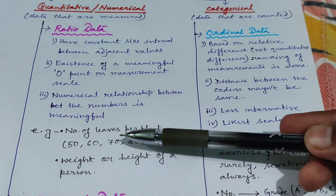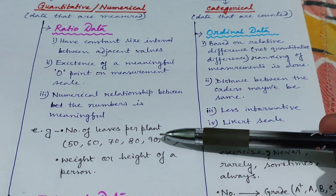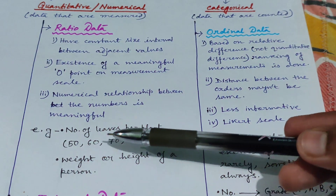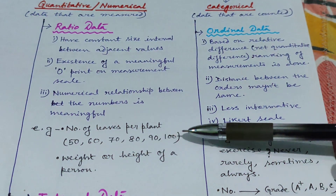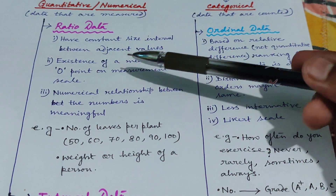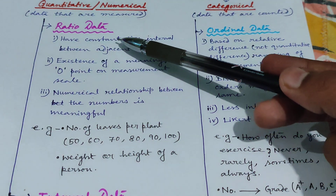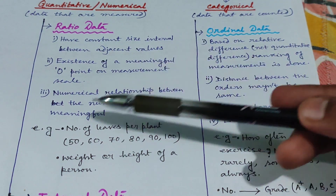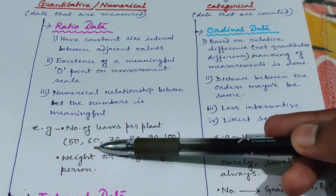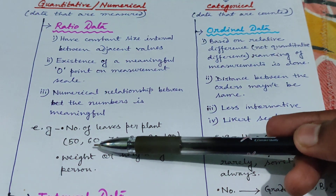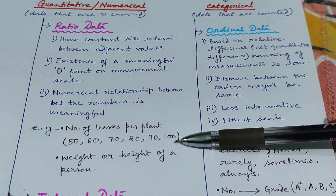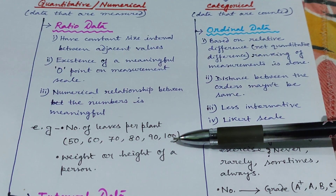The first example is number of leaves per plant — it could be 50, 60, 70, 80, 90, 100. They have a constant size interval because the difference between 50 and 60 is equal to the difference between 90 and 100. So there is a constant size interval between adjacent values.